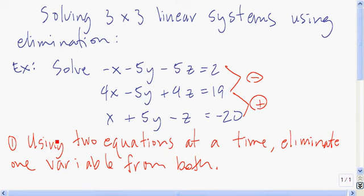Using two equations at a time, eliminate the exact same variable from both — not just any one variable, but the exact same variable. So we're going to use the first two equations and subtract parts of the second equation from the first.